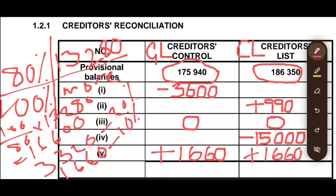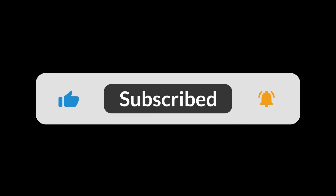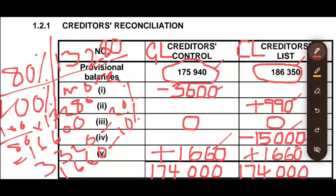If we've done everything correctly and add or subtract all the figures with their respective signs, both sides will total R174,000. Even though our figures started off different, they are now equal — meaning our reconciliation has been successful. Thank you so much for watching. If you are not subscribed to the channel, please subscribe so you don't miss out on any content. God bless you.